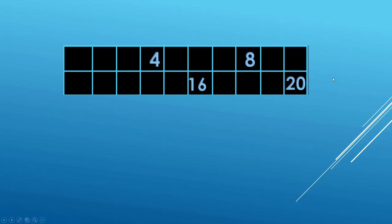Time for the big guy to fly. Two times ten is twenty. Count them off — try to stay ahead of me: two, four, six, eight, ten, twelve, fourteen, sixteen, eighteen, twenty. Two times ten is twenty.